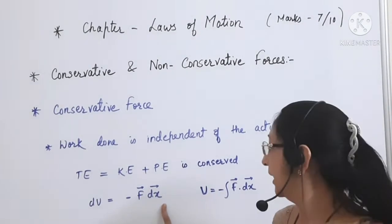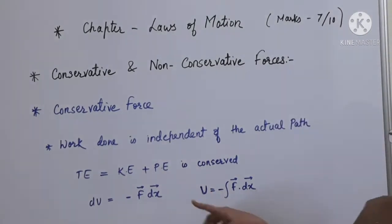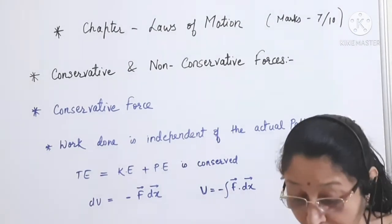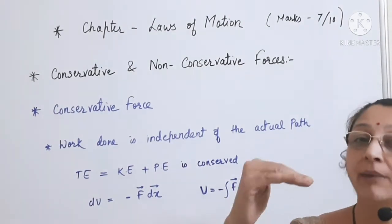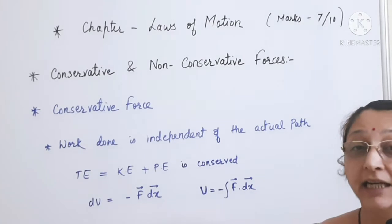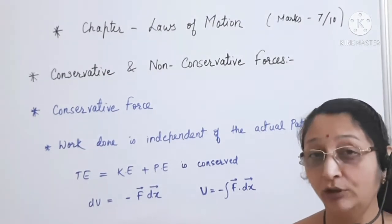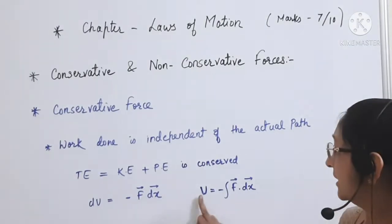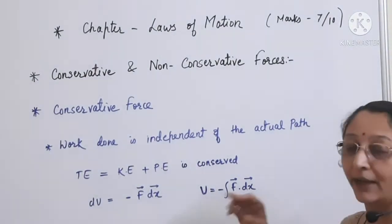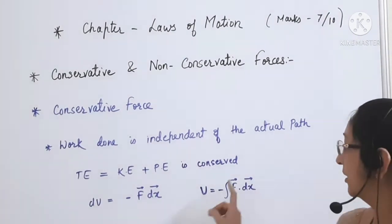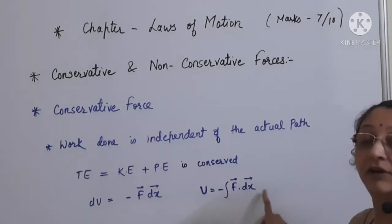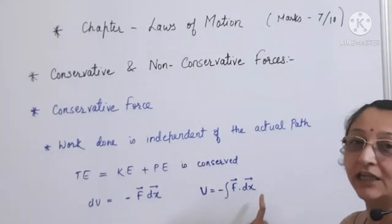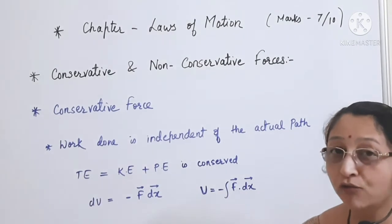Now we integrate from the floor to some height h. So we write u is equal to minus the integral of F dx from zero to h. This gives us the potential energy for the conservative force.